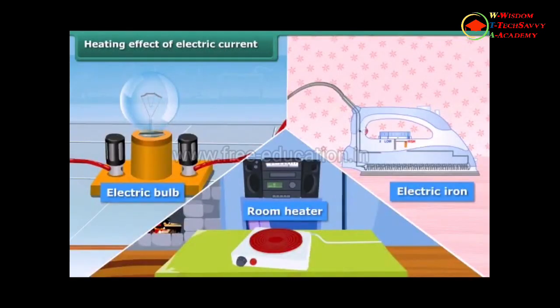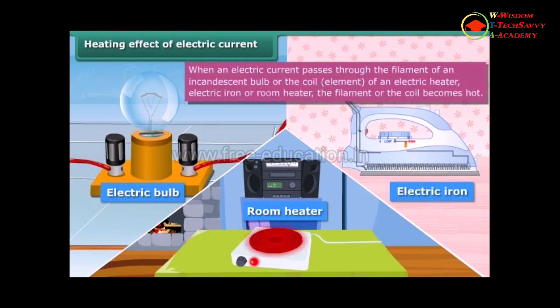The heating effect of electric current. Students, when an electric current is passed through a metallic wire like the filament of a bulb or coil of an electric heater, geyser, electric iron, or room heater, the coil becomes hot and glowing. This is known as the heating effect of electric current. In this condition, they radiate heat and light.